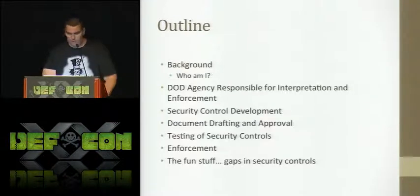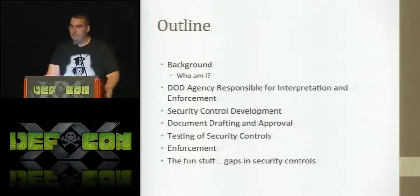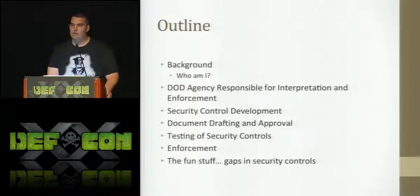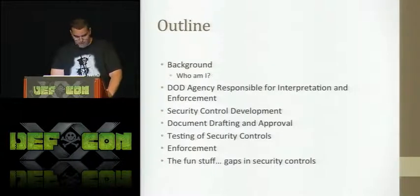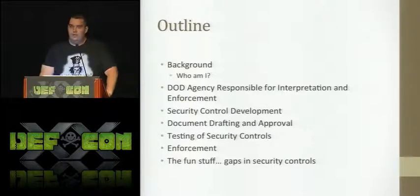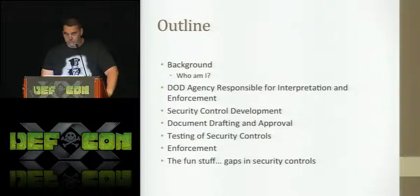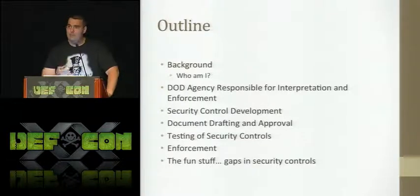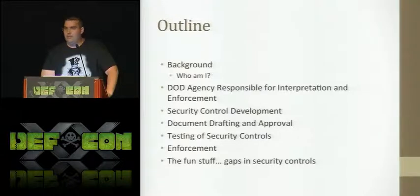My name is James Kirk. I'm currently a senior security consultant for Rapid7, but this talk is solely my own opinion and doesn't represent the company at all. I used to be a special agent for the Defense Security Service — I was with the agency for a year and eight months before I just couldn't take it anymore. This topic is mainly going to be about the DSS: how they implement controls, how they develop them, and some of the major flaws in their security controls.